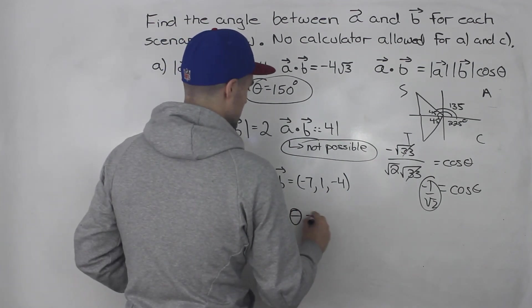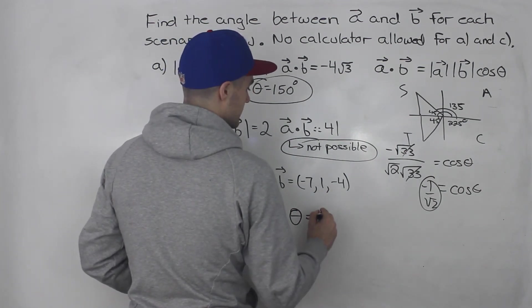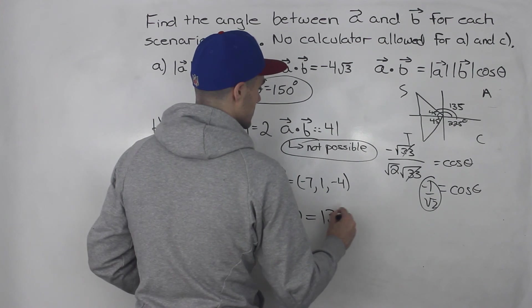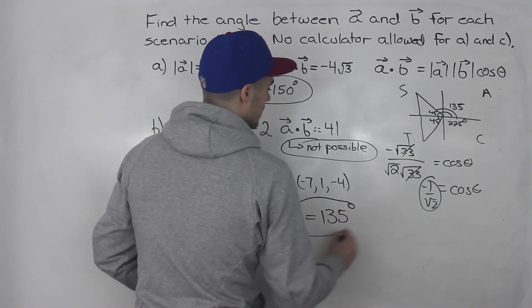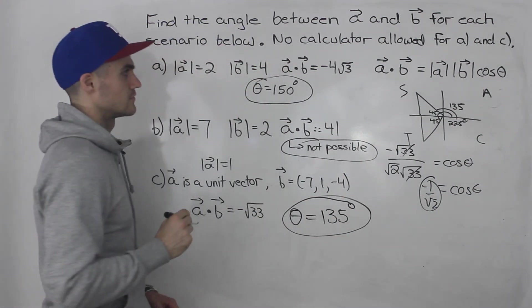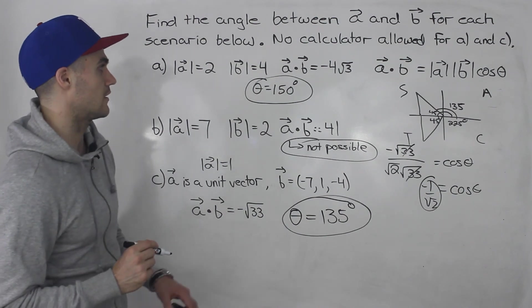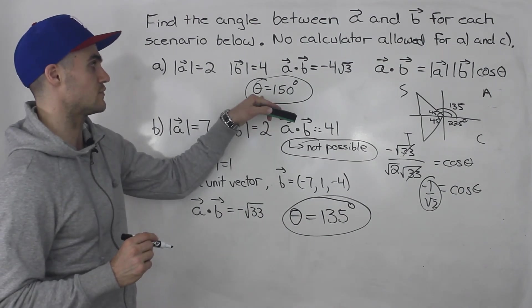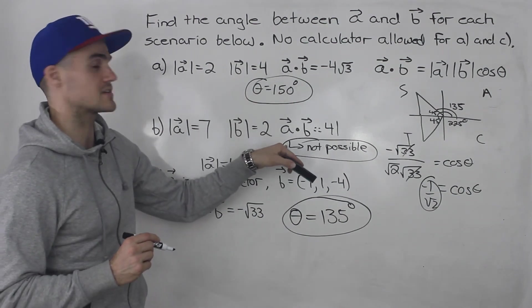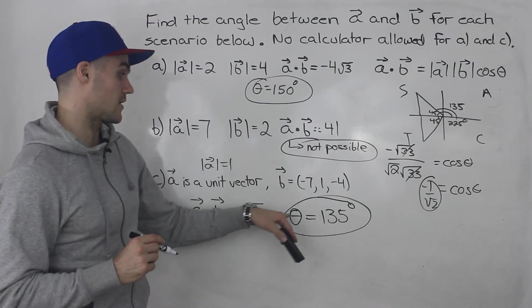So the answer for part c is that the angle between the vectors is going to be 135 degrees. And those are your final answers. So theta is 150 degrees for part a, part b is not possible, and then part c, the angle is 135 degrees.